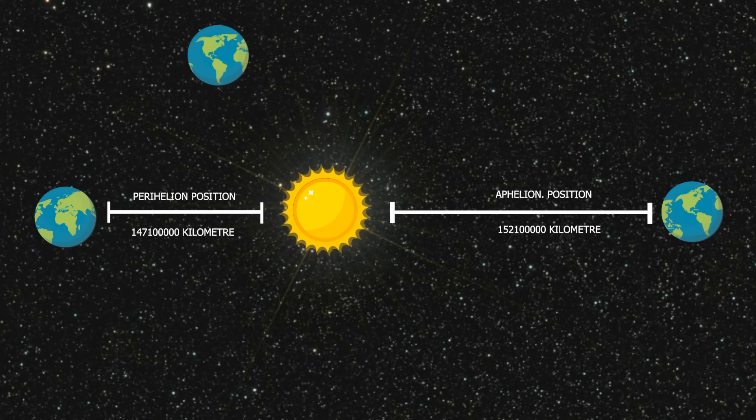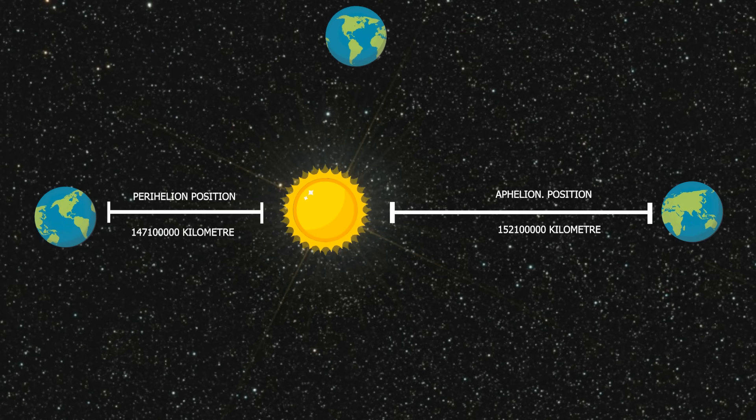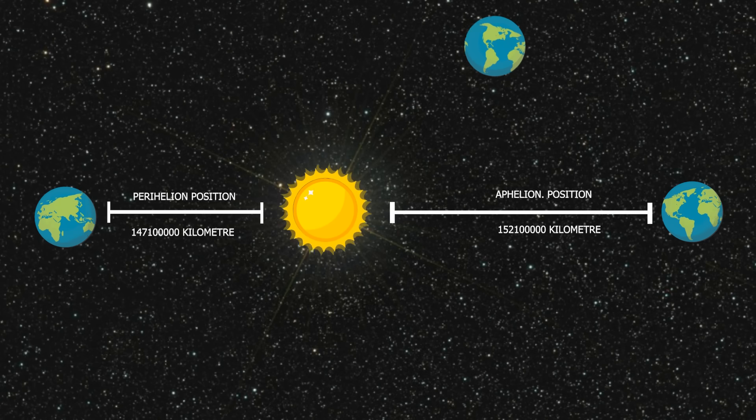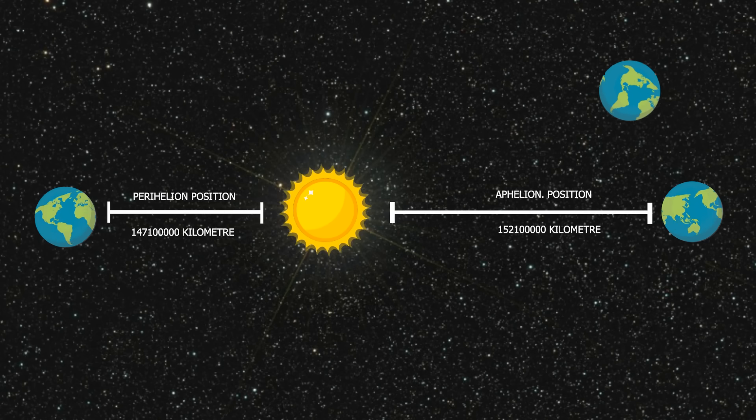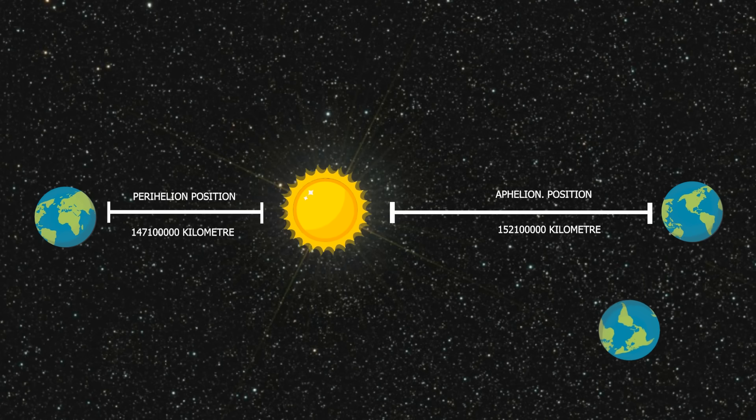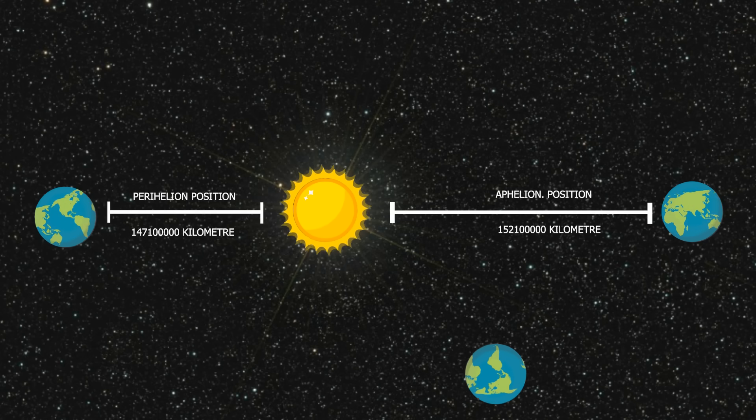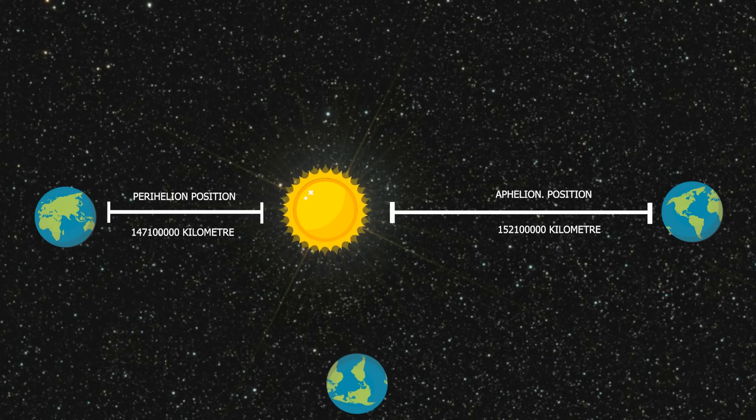And during summer, distance between Sun and Earth is smallest. This position is called Perihelion. At this position, distance between Earth and Sun measures to be 14 crore 71 lakh km.